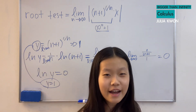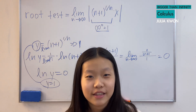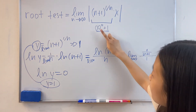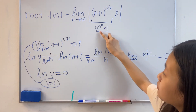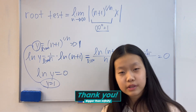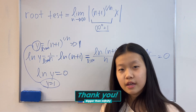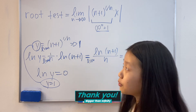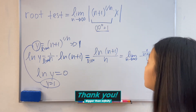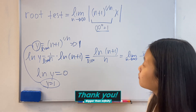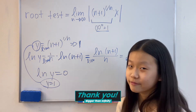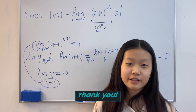I explained why infinity to the power of 0 is not always equal to 1 when we take the limit of something, showed a counterexample, and also showed why the limit of n plus 1 to the power of 1 over n equals 1. Thank you for watching, everyone. Have a great day.